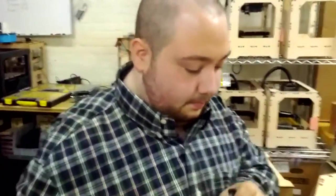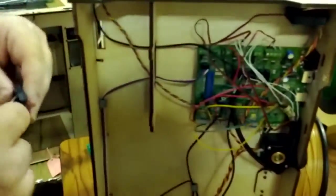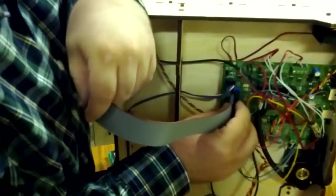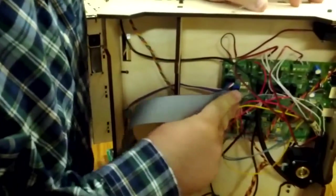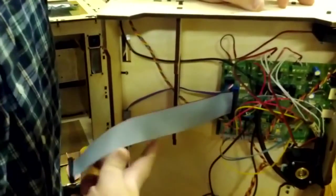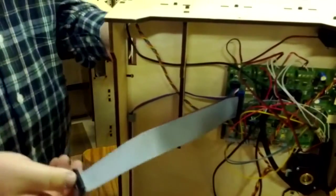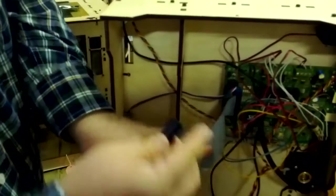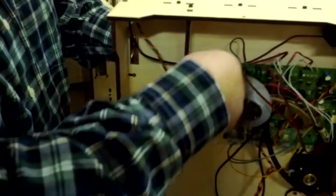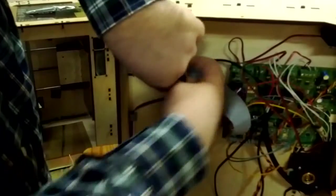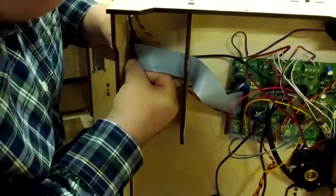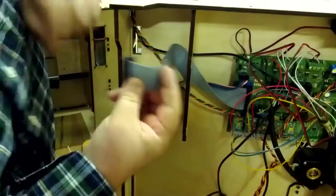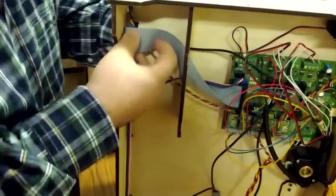Now you're going to take the new ribbon cable and first you'll attach it to the mighty board. It'll only go in one way. Now, in order to attach it to the interface, it's going to have to twist and come up like this. So as we put it through here, twist it around, just one twist, 180 degrees, and push it up through here.